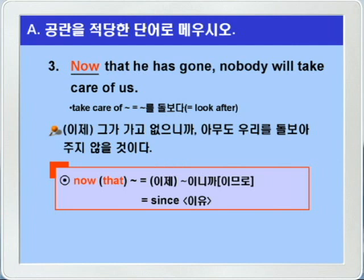now that, 혹은 that을 생략하고 now, 뭐뭐 하면, 이제 뭐뭐이니까, 혹은 이제 뭐뭐이므로, 이런 뜻으로 이유를 나타내는 since의 의미가 된다고 그랬죠. 그래서 now that he has gone. 이제 그가 가버렸으니까, 혹은 이제 그가 가고 없으니까, 이런 의미가 되는 것입니다.